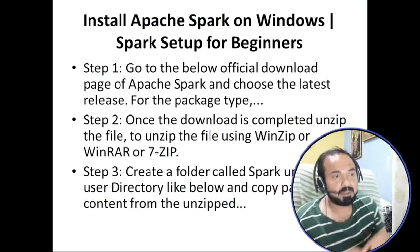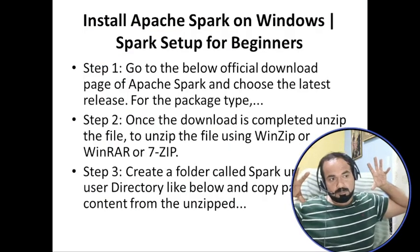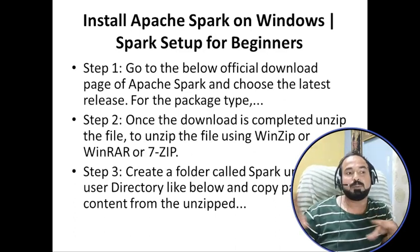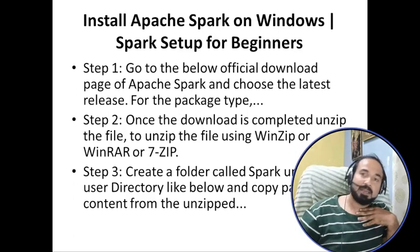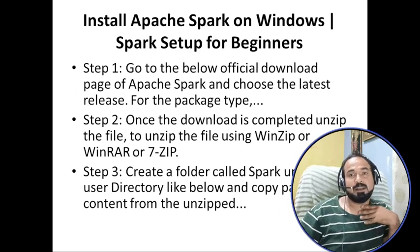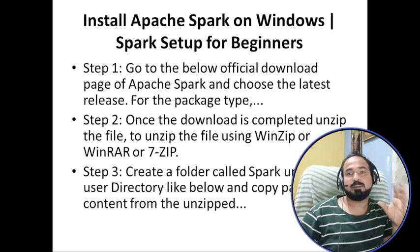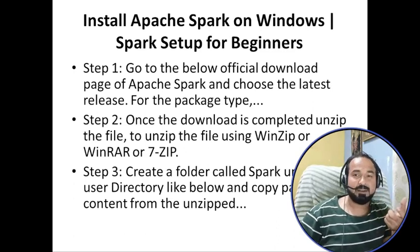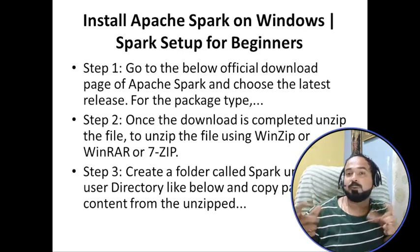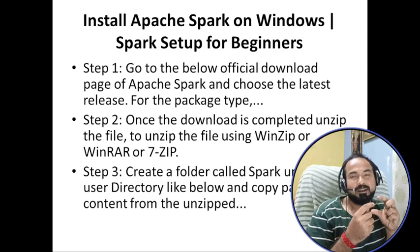The first step is to go to the official Apache Spark download page and choose the latest release. The latest version right now is Apache Spark 3.x. Visit the official Apache website and download the version you want. Once the download is completed, it is generally a zip file — you just unzip that file. You can create a folder called 'spark' and put the unzipped contents inside it.